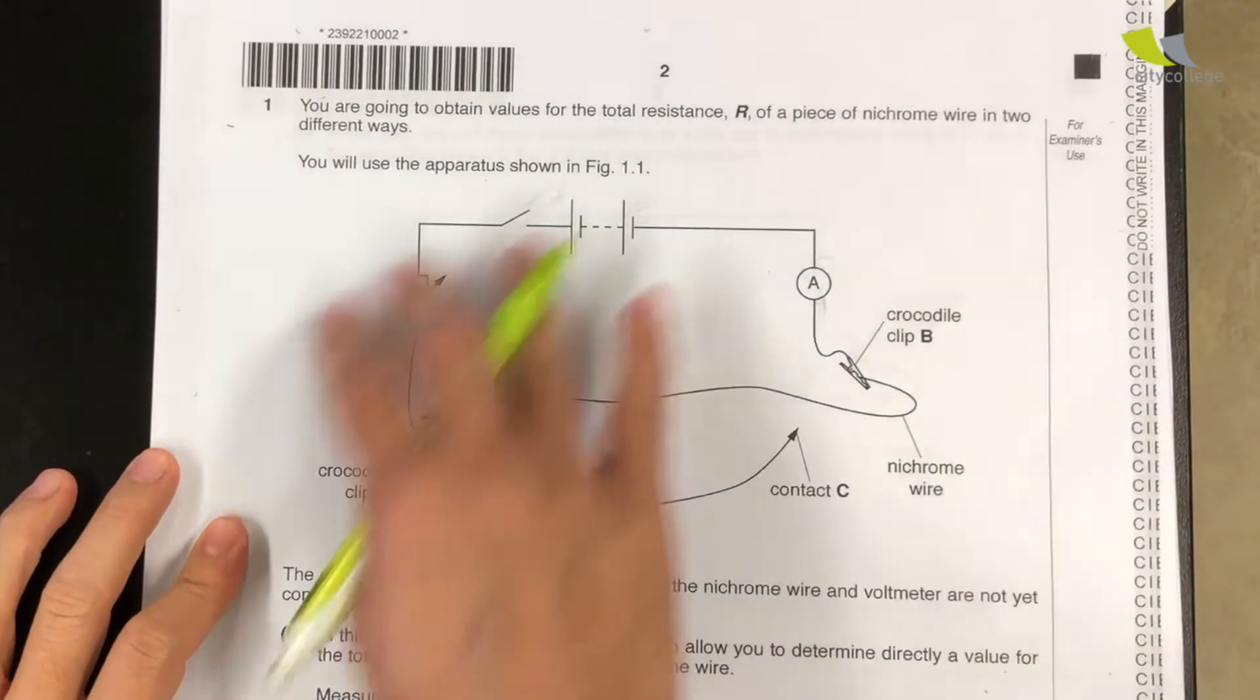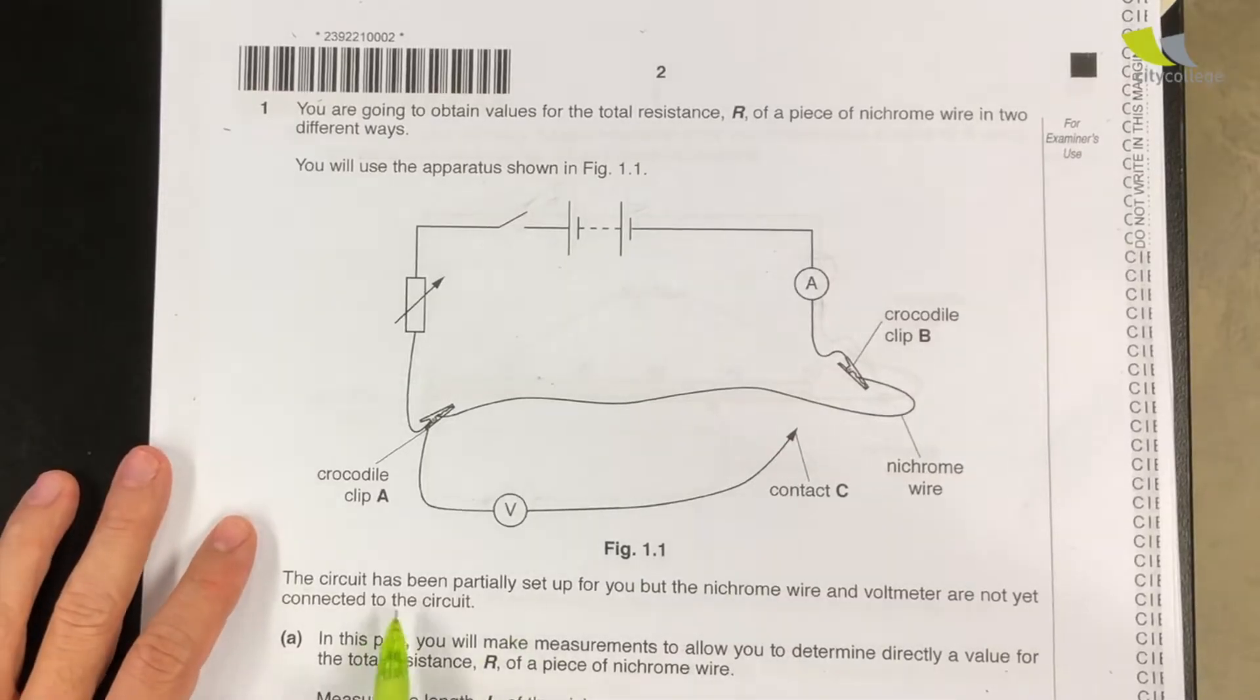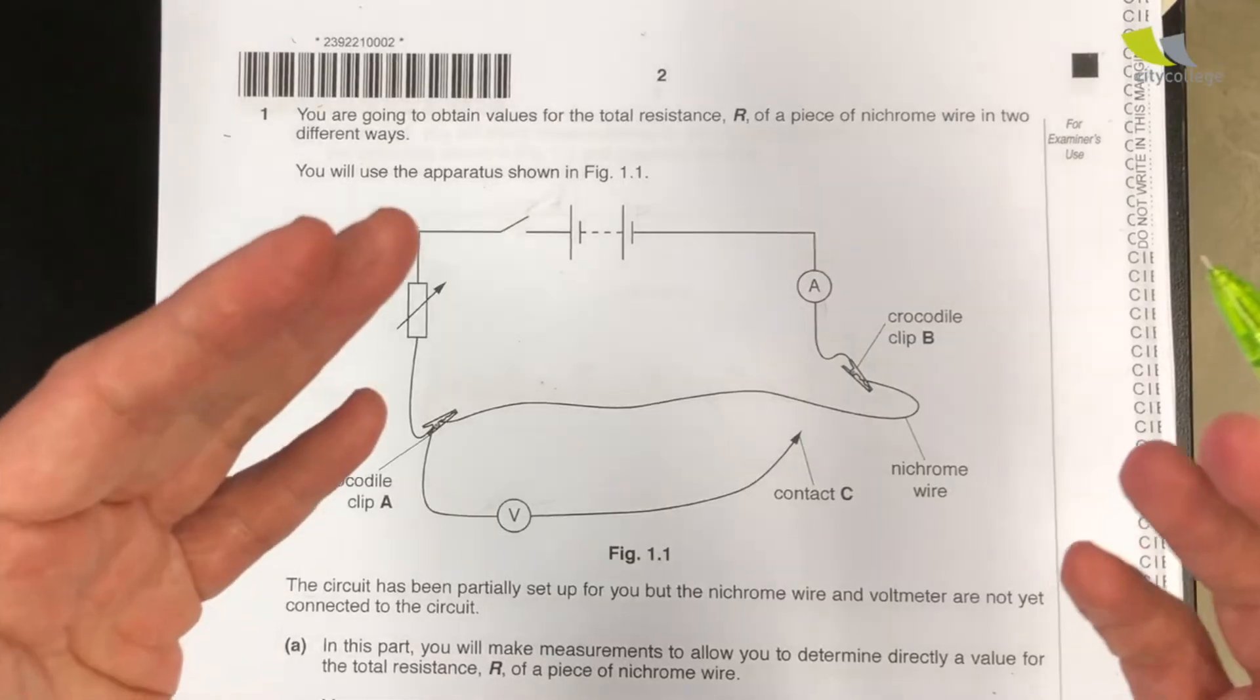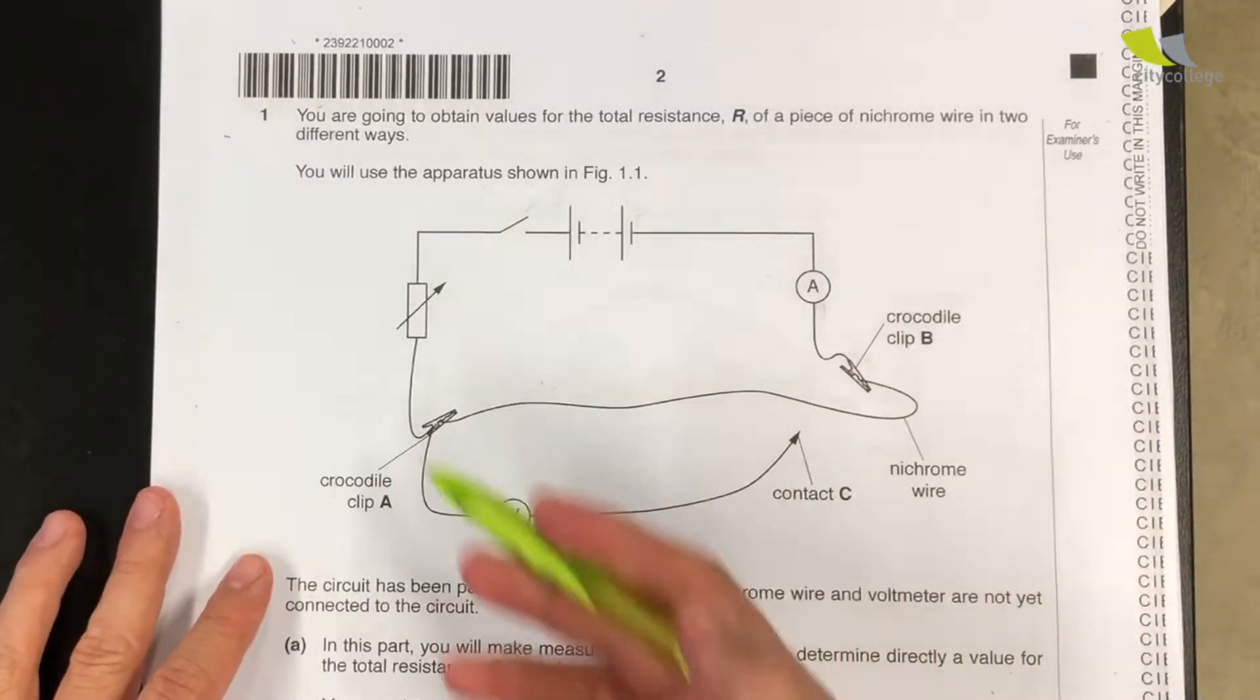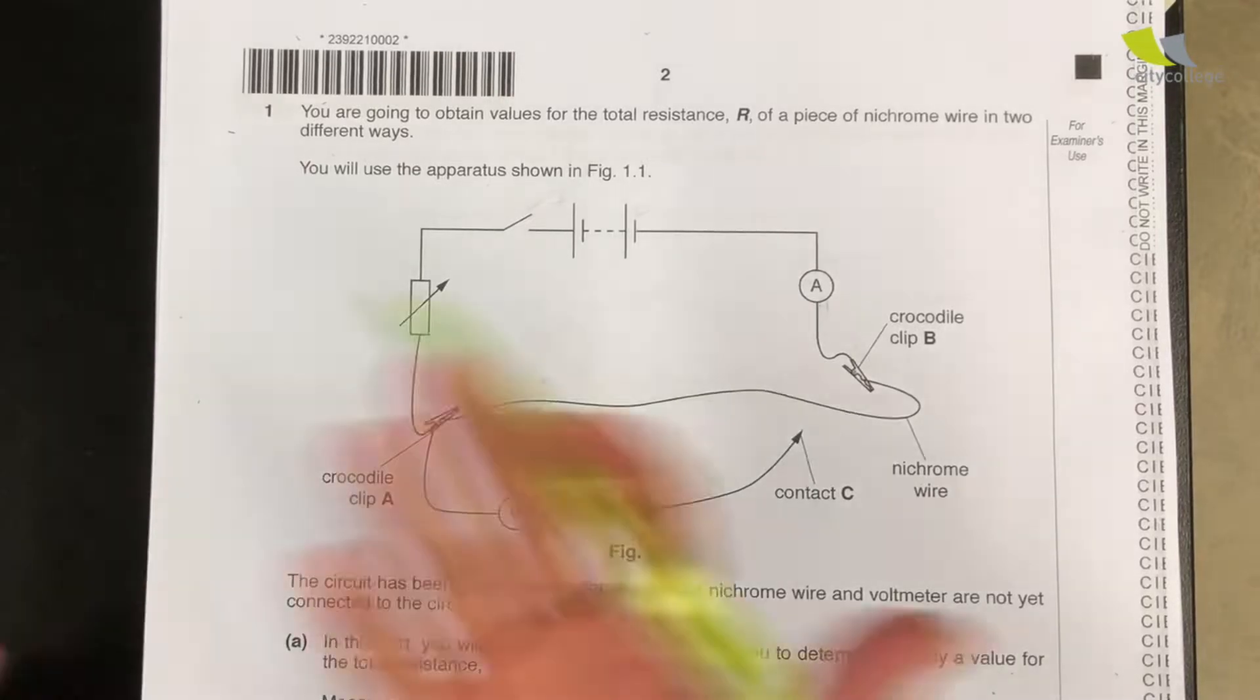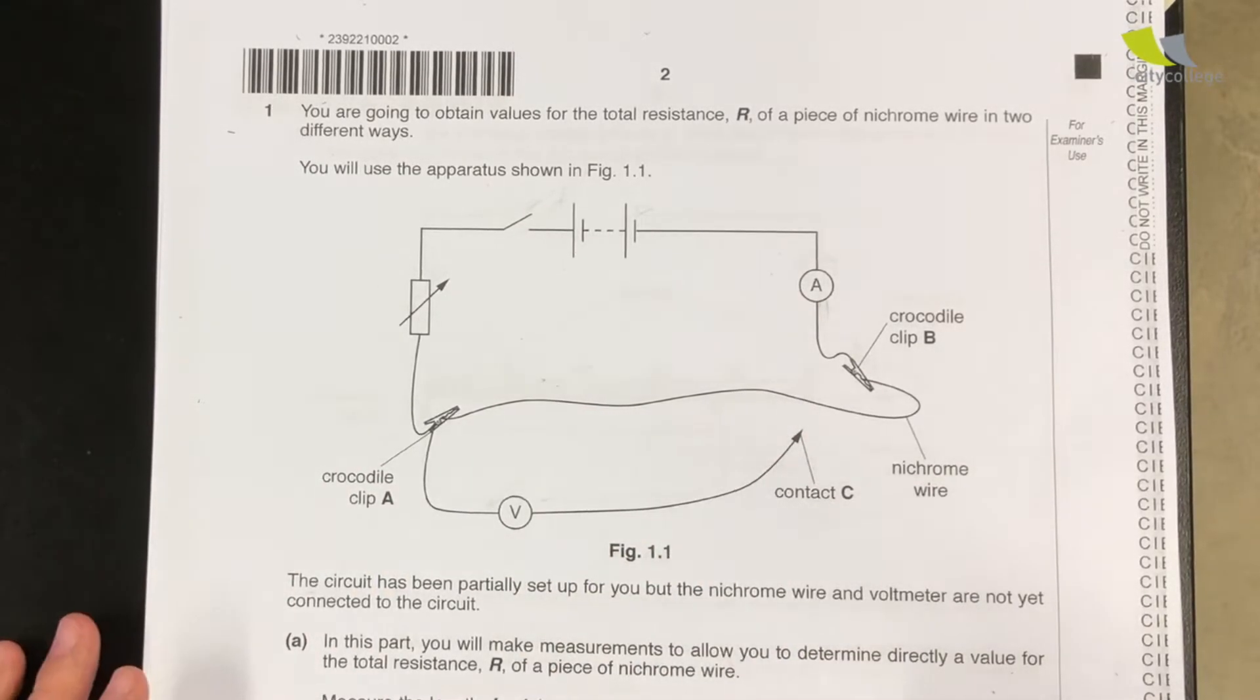Alright, so this is the 2016 paper. The electricity setup is pretty straightforward. The main challenge is that the circuit has only been partially set up. So the test is to see whether you are able to read a circuit diagram and translate it to actual apparatus for the setup. So the main video, that's the main skill we want to cover today.